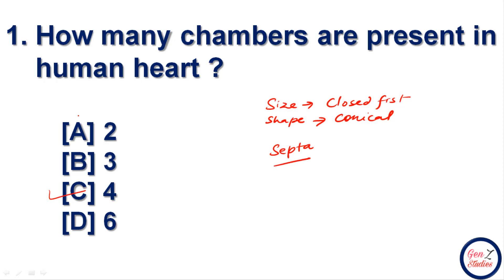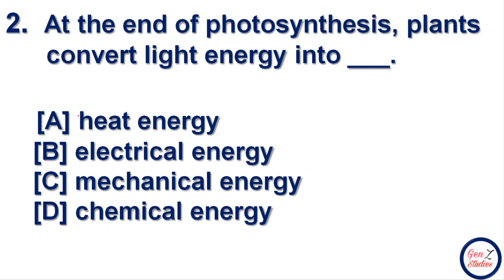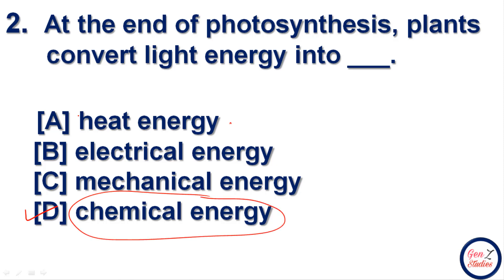Next question: at the end of photosynthesis, plants convert light energy into which form of energy? Options are heat energy, electrical energy, mechanical energy, and chemical energy. Option D is correct — chemical energy. Photosynthesis is a process in which plants utilize sunlight, water, and carbon dioxide to synthesize their own food. Sunlight is converted into chemical energy.